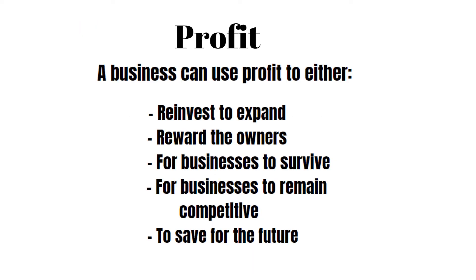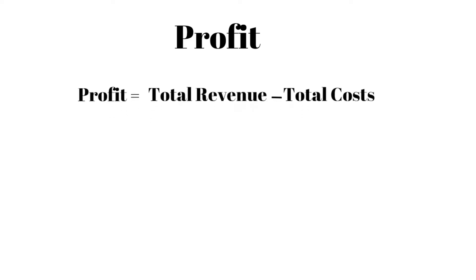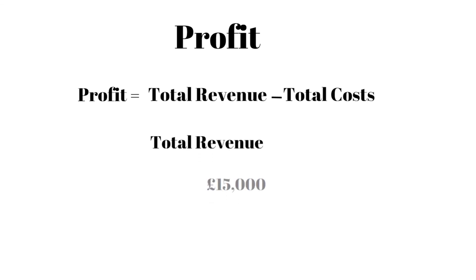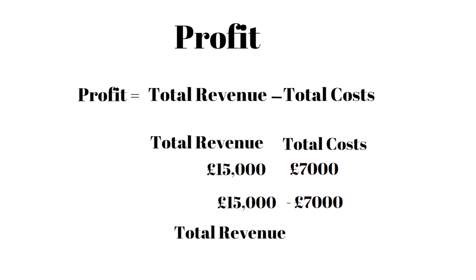There are a number of ways that businesses can use profit: they can use it to reinvest, to expand, to reward the owners, for the business to survive, to remain competitive against their rivals, and also to save for the future. This calculation is fairly straightforward. Profit equals total revenue minus total costs — so if total revenue was £15,000 and total costs were £7,000, you take the £7,000 away and the answer is £8,000.